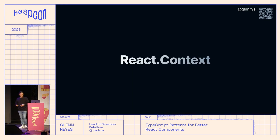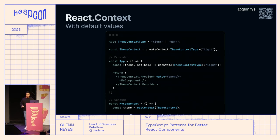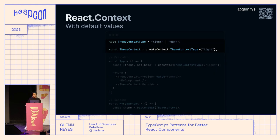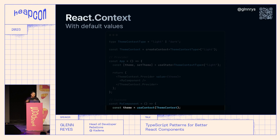Now how about React Context. There are two types: ones that have values from the beginning and ones that don't. For contexts with values, you define your context type — for example, a theme type of 'light' or 'dark' — pass this string literal to createContext as a default value, and then in your provider component you set state with a default of 'light' and pass it as the value. For consuming, just use useContext with your context and it's fully typed.